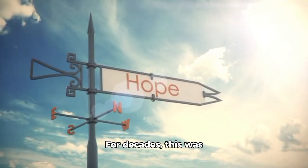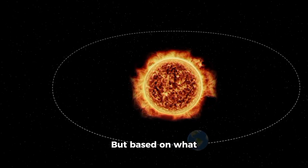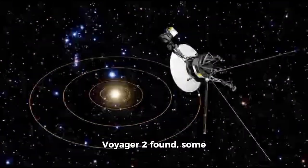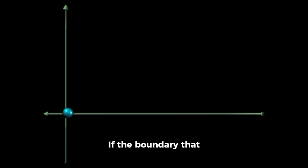For decades, this was praised as a sign of hope. But based on what Voyager 2 found, some now see it differently. If the boundary that separates our system from the galaxy isn't a gradual fade but a well-defined edge, if it reacts, if it watches, what does it imply about attaching a map to our home on the very probe that pierced that edge?